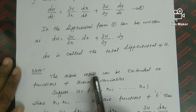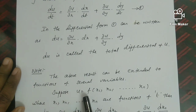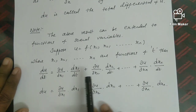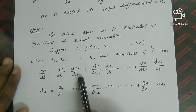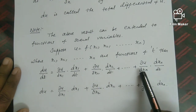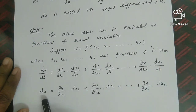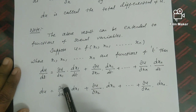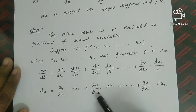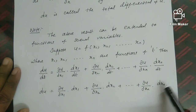Note that the above result can be extended to functions of several variables. Suppose u equals f of x1, x2, ..., xn, where x1, x2, ..., xn are functions of t. Then du by dt equals partial u by partial x1 into dx1 by dt plus partial u by partial x2 into dx2 by dt plus ... plus partial u by partial xn into dxn by dt. That is, the total differential du equals partial u by partial x1 into dx1 plus partial u by partial x2 into dx2 plus ... plus partial u by partial xn into dxn.